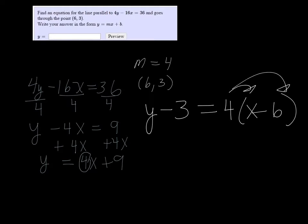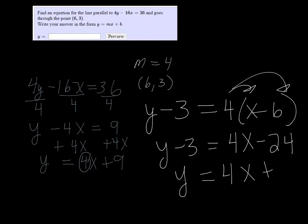Distributing the 4 through, I get y minus 3 equals 4x minus 24. Add 3 to both sides, and we get 4x plus 27.